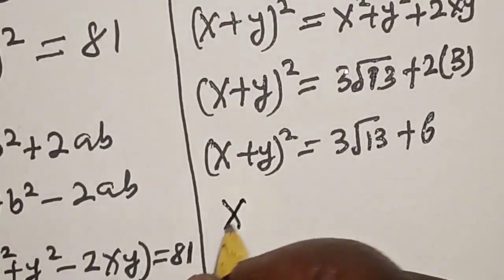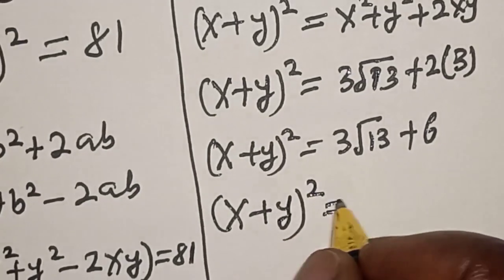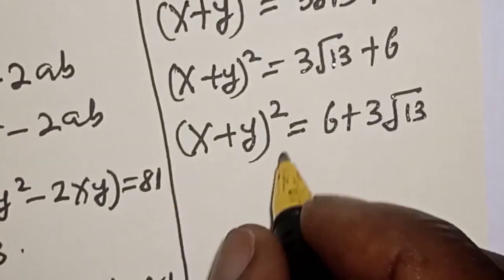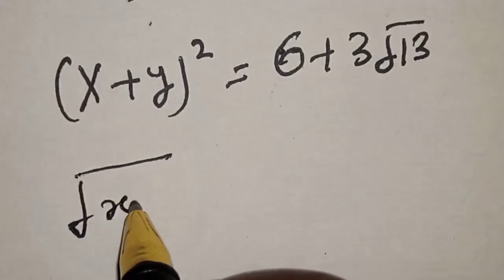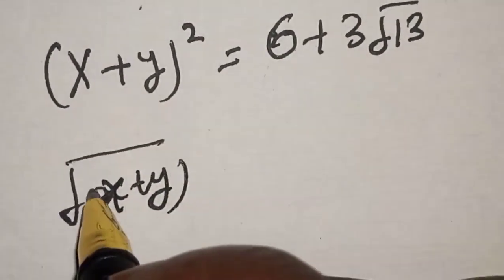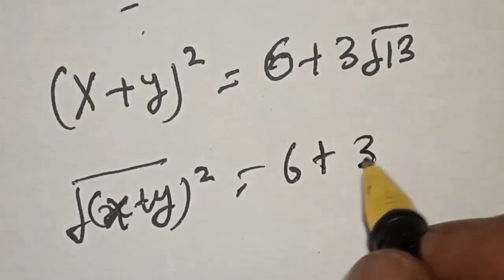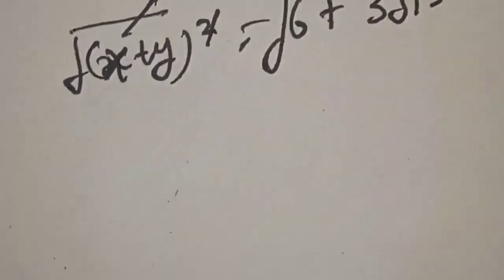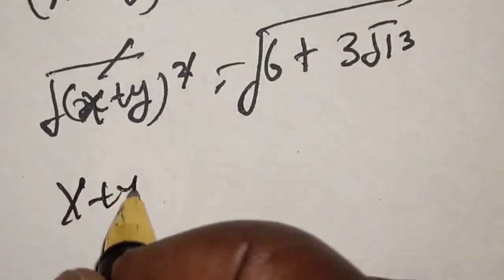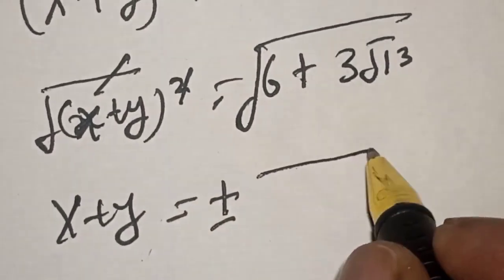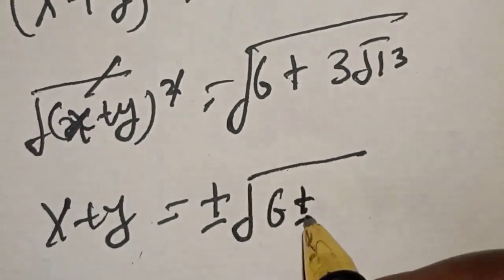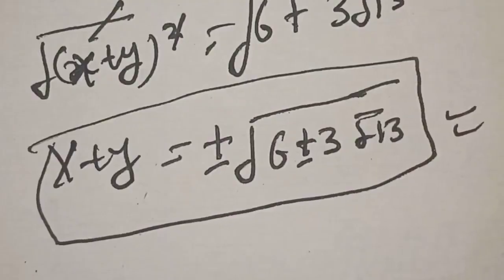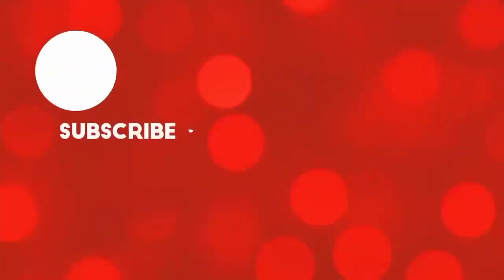So x plus y squared is equal to 6 plus 3 root 13. Taking the square root of both sides, our final answer is x plus y is equal to plus or minus square root of 6 plus 3 root 13. If you loved the class, please like, share, comment and subscribe. Thank you, bye!